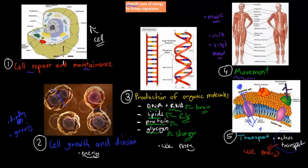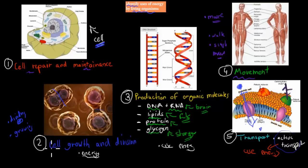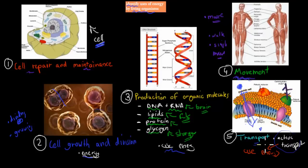To summarize: cell repair and maintenance — we need to keep our cells going, and all living organisms are made up of cells. Cell growth and division — we need to make millions of new cells on a daily basis. Production of organic molecules such as DNA, RNA, lipids, proteins, and glycogen. Movement — just walking around or gently moving our muscles requires energy. And transport, especially active transport, when we use energy to move substances across the cell membrane that would not go by themselves. Hopefully that was useful.